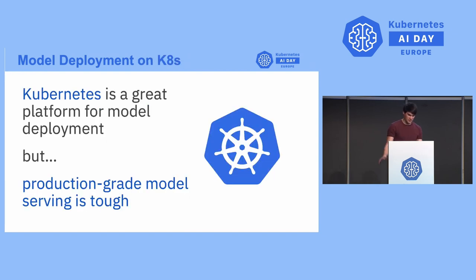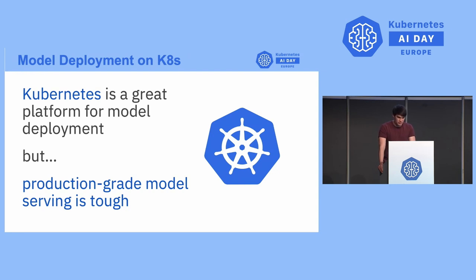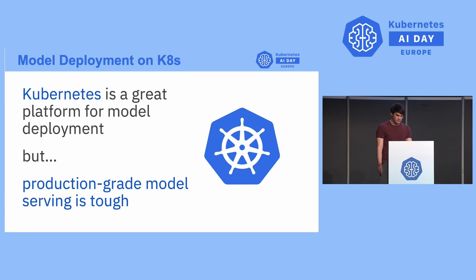As we speak about microservices, Kubernetes is the deployment target of choice. Kubernetes solves a whole host of problems — from scaling your service up and down, launching and spinning up new model server pods as request load goes up and down, to allowing zero downtime model upgrades using rolling deployments, and of course resiliency, where model-serving pods restart automatically if there's a failed pod.